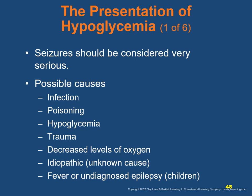Seizures associated with hypoglycemia should be considered very serious, even in patients with a history of chronic seizures. Possible causes include infection, poisoning, hypoglycemia, trauma, decreased oxygen levels, idiopathic causes, fever in children, and undiagnosed epilepsy in children. Though brief seizures are not harmful in themselves, they may indicate a potentially life-threatening underlying condition.